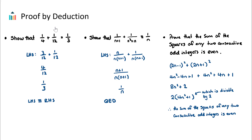For these basic proof by deduction questions, the goal of an algebraic proof, like we have here, is to transform one side of the mathematical statement until it looks exactly like the other side. That's the goal. I'll take you through three examples, and then hopefully we can get the idea of how to solve these types of questions.